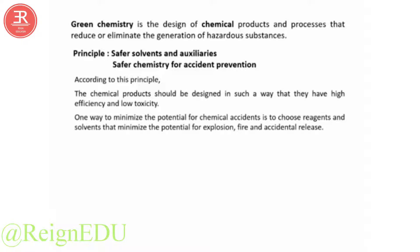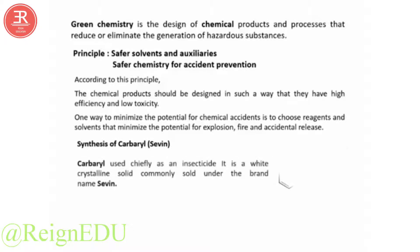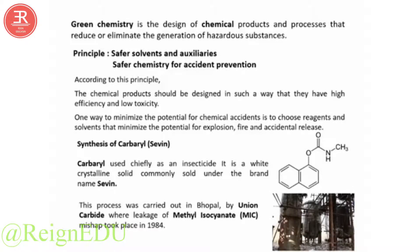One way to minimize the potential for chemical accidents is to choose reagents and solvents that minimize the potential for explosion, fire, and accidental release. We are taking the example of the synthesis of carbaryl, also called Sevin. Carbaryl is used as an insecticide — a white crystalline solid commonly sold under the brand name Sevin. This process was carried out in Bhopal by Union Carbide, where leakage of methyl isocyanate took place in 1984, commonly known as the Bhopal gas tragedy.